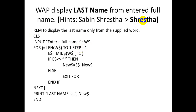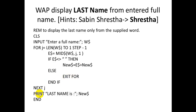To extract the last name, we loop from the end: FOR j equals LEN(w$) to 1 STEP -1. Use e$ equals MID$(w$, j, 1). If e$ is not equal to space, add the character to new$. If e$ is equal to space, EXIT FOR, which terminates the FOR-NEXT loop. Then END IF, NEXT j, and PRINT 'Last name is'; new$.